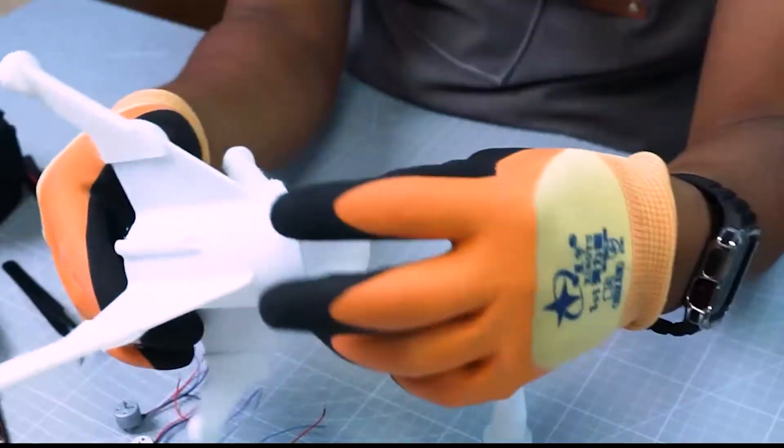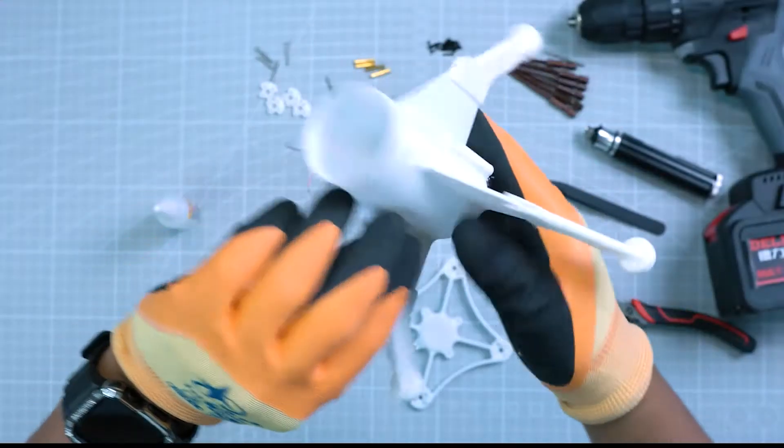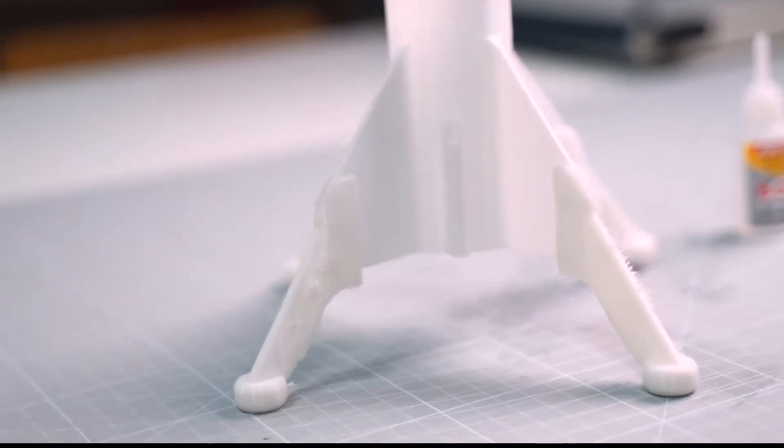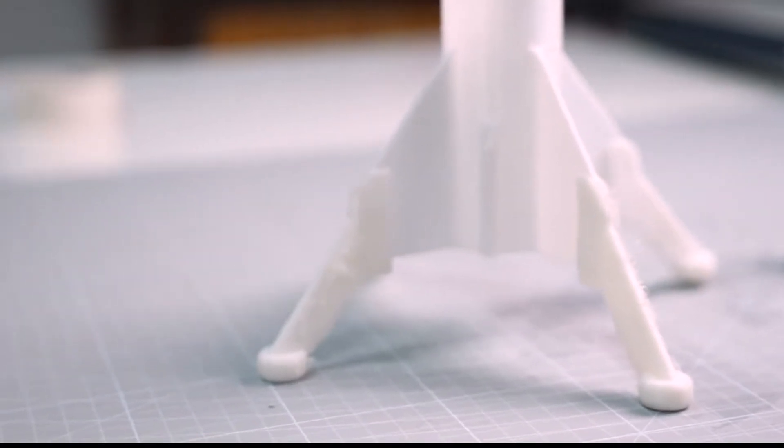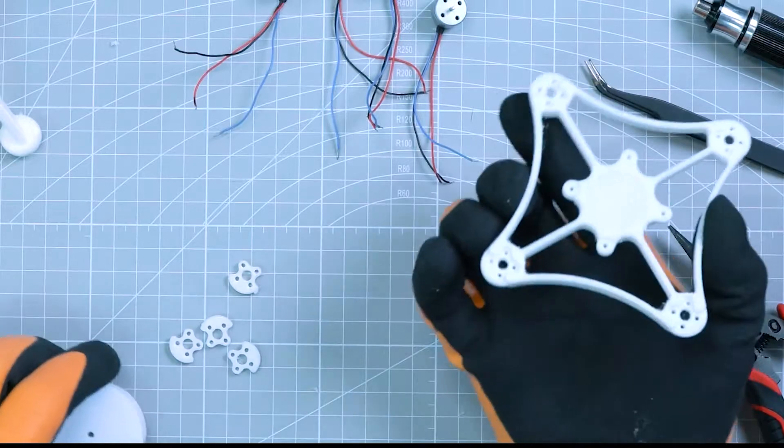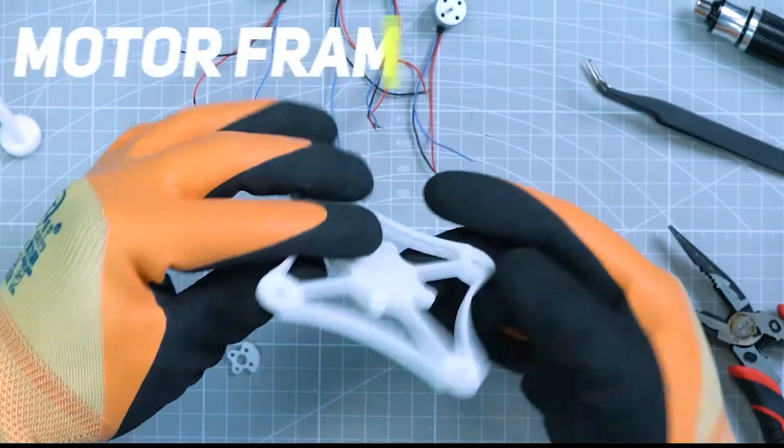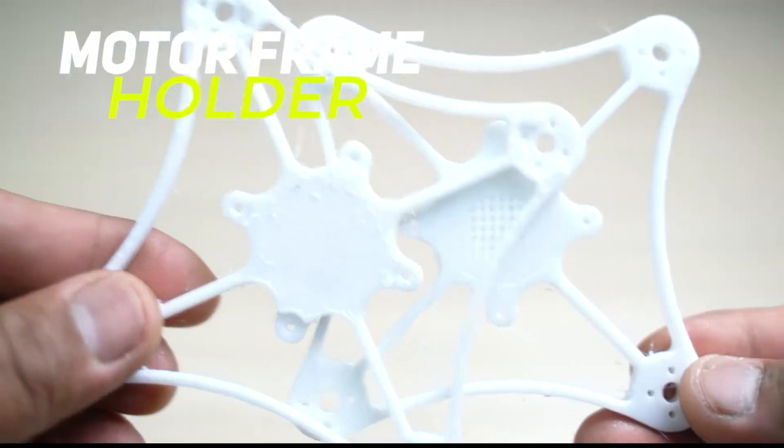After attaching all the landing legs on the bottom fuselage, set it aside first. Going to our motor frame holder. Motor frame holder is 3D printed PLA material.